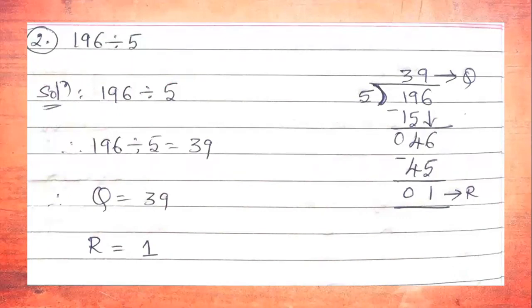We read the 5-table again for a number less than or equal to 46: 5×1=5, 5×2=10, 5×3=15, 5×4=20, 5×5=25, 5×6=30, 5×7=35, 5×8=40, 5×9=45, 5×10=50. The closest without exceeding 46 is 5×9=45. We write 45 and subtract: from 6 subtract 5 gives 1, and 4−4=0. So we get remainder 1 and quotient 39.